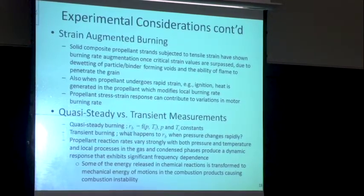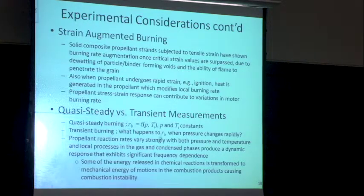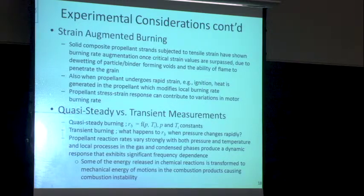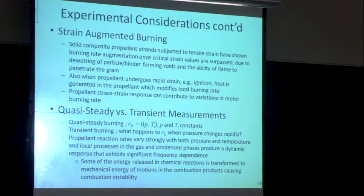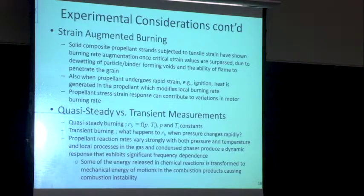The concept of transient or quasi-steady burning is also very important. In St. Robert's Law, I assume burning rate is just a function of pressure and initial temperature. But transient burning occurs because the time constants for heat transfer in the gas phase differ from those for conduction in the condensed phase. If pressure suddenly goes up, the flame moves closer to the surface and the regression rate is faster, but the thick thermal profile in the condensed phase at lower pressure takes time to adjust, affecting the energy content and thus the burning rate during the transition.